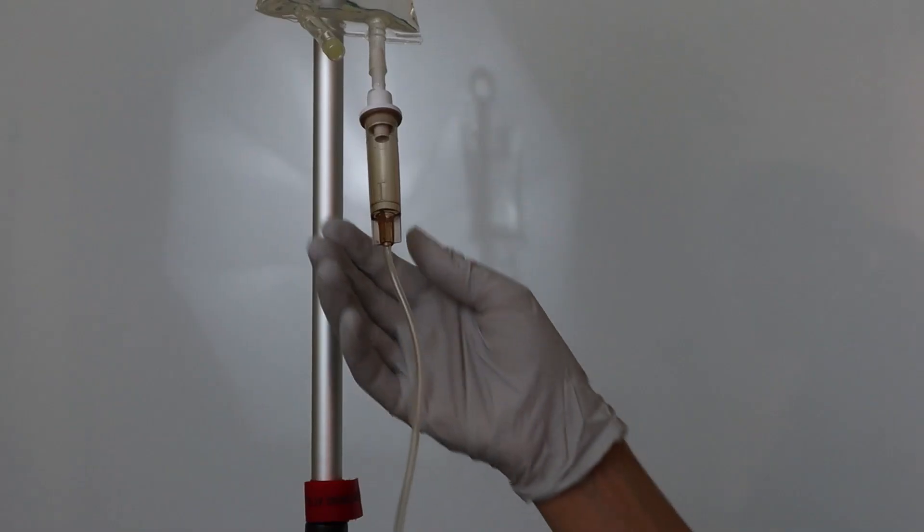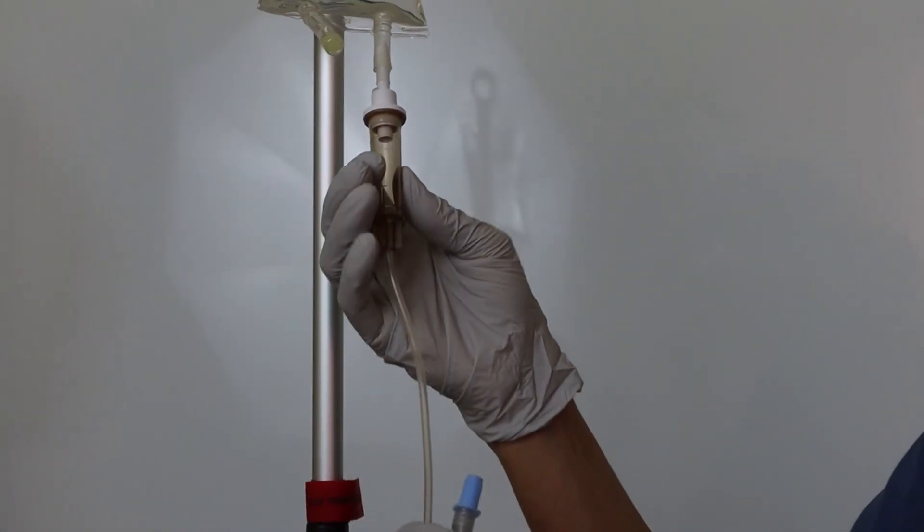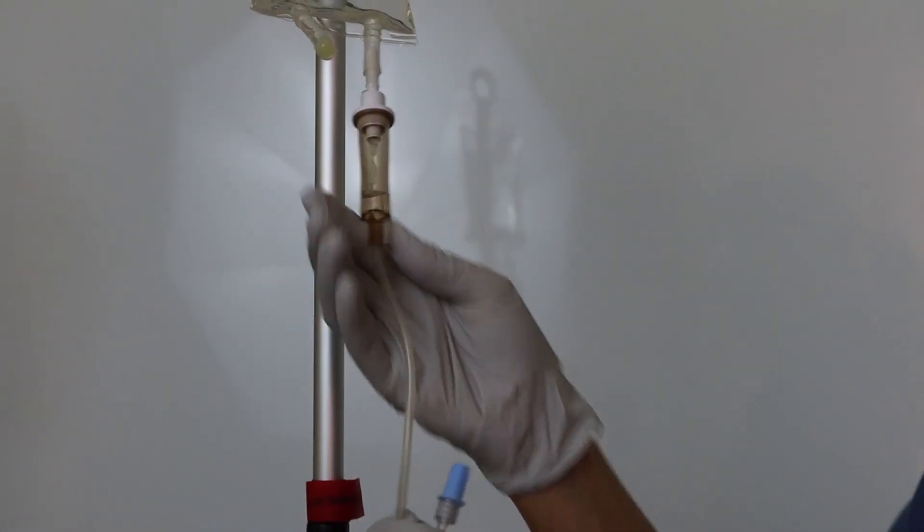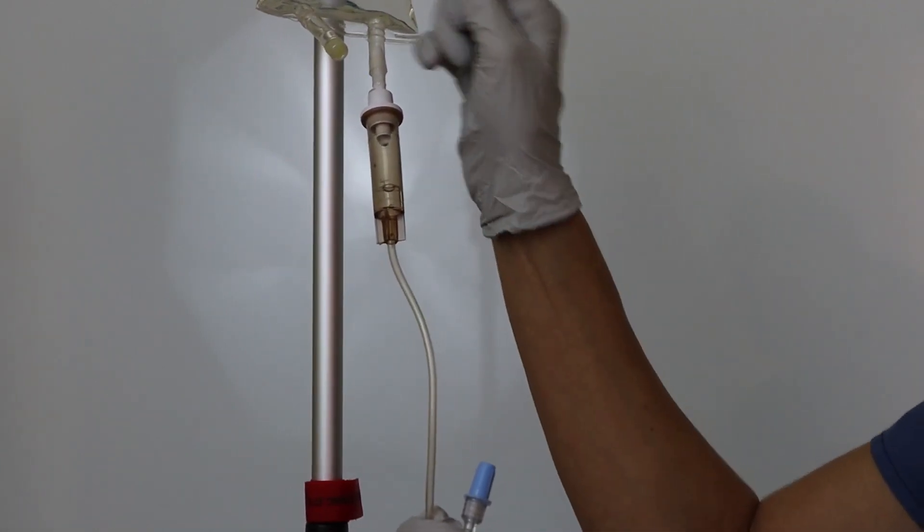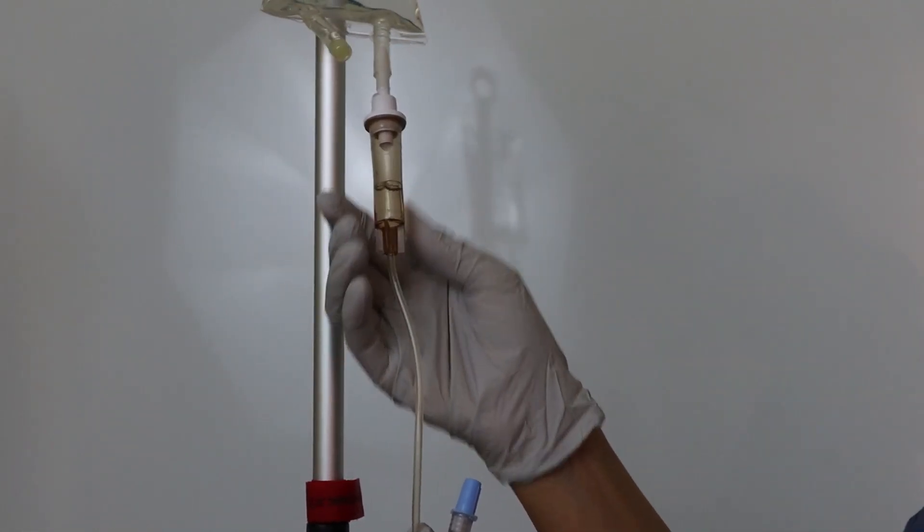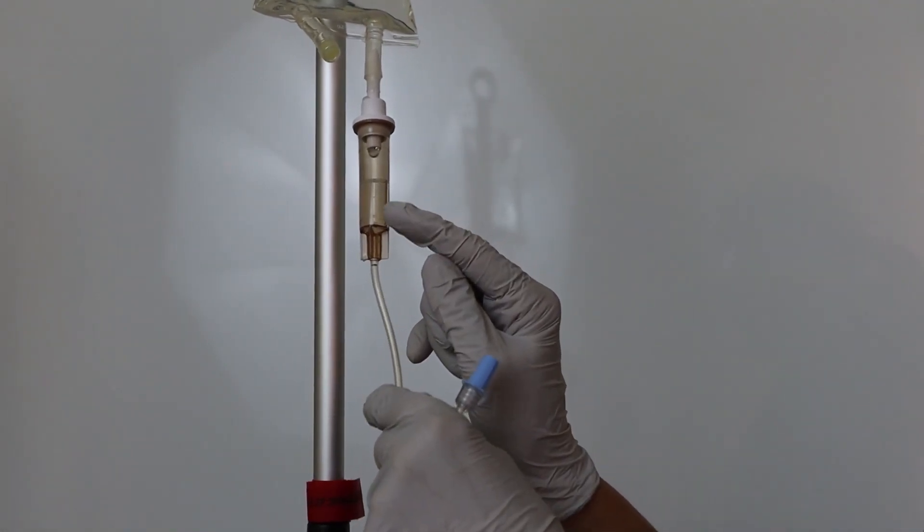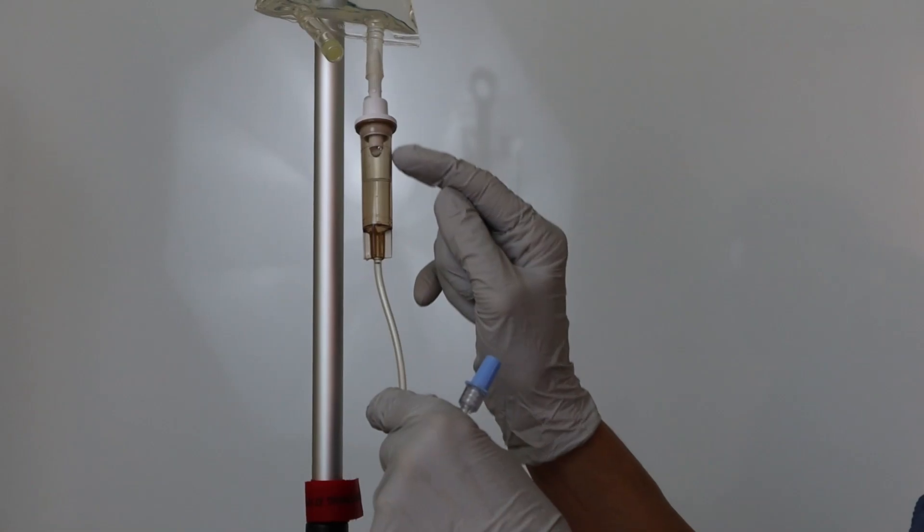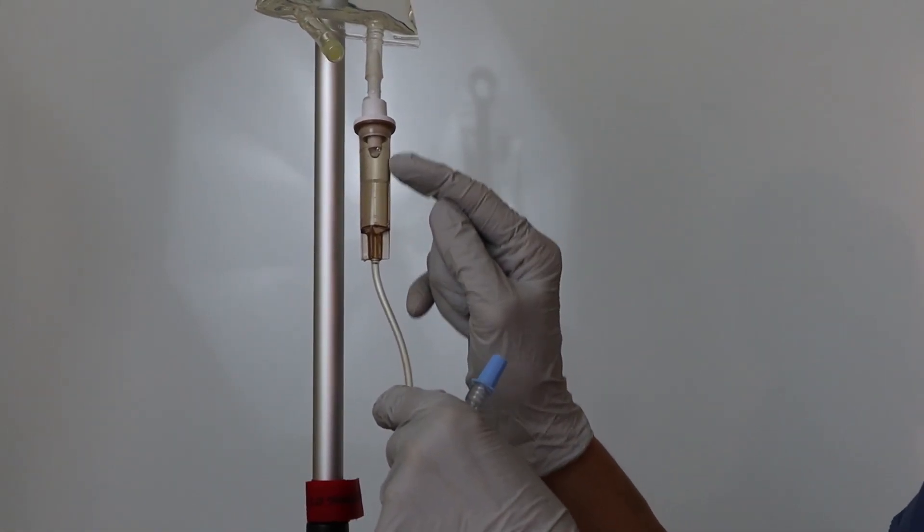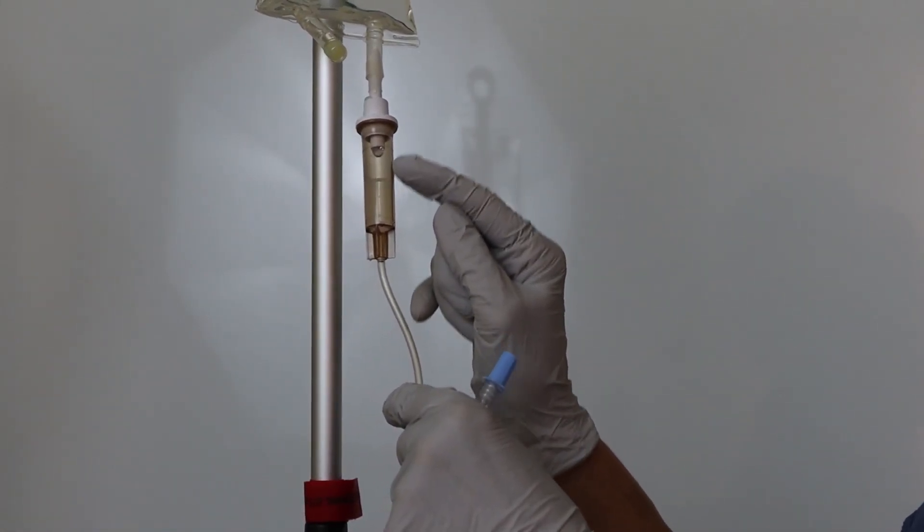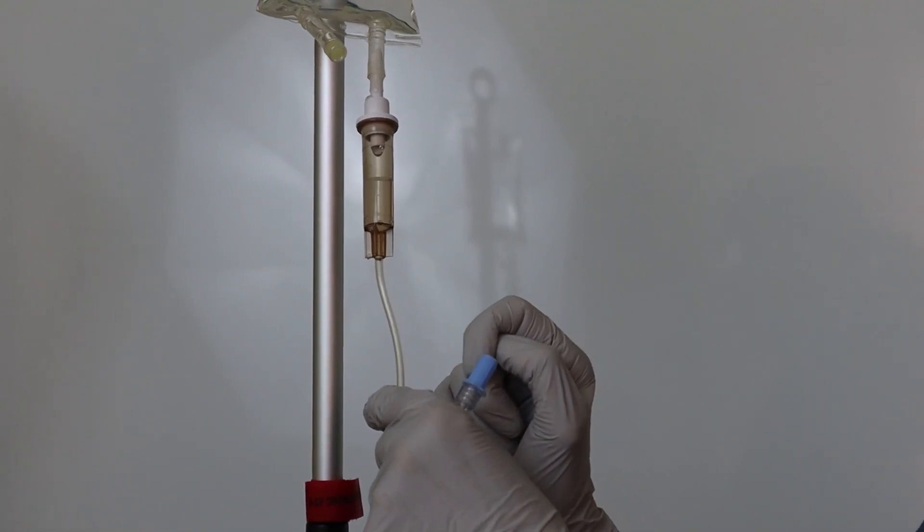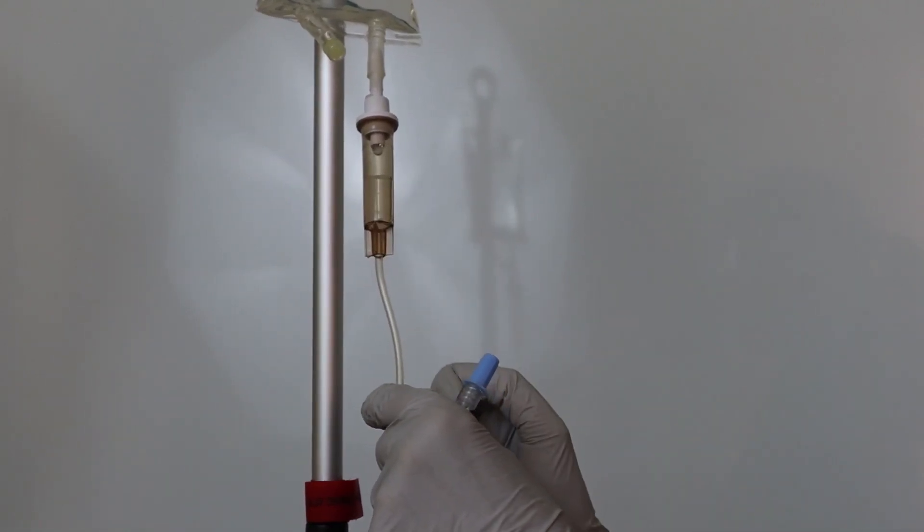From here, I press the drip chamber, which will push air into the bag and let fluid come out until I fill the drip chamber about halfway. If you fill it too far, you can't really see if it's dripping down or where the fluid is going. After the drip chamber is halfway filled...